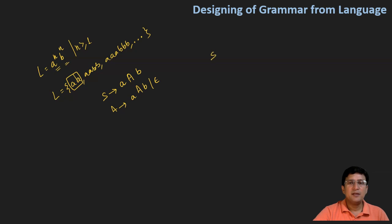If I assume that I have a string which I need to generate or derive, then let's say the string is double a double b. So how will this be generated? A produces small a, capital A, b and then this A generates small a, capital A, b and this A generates epsilon.